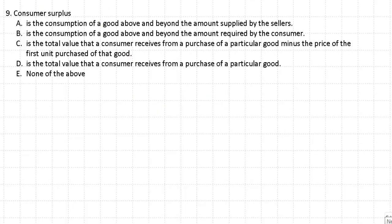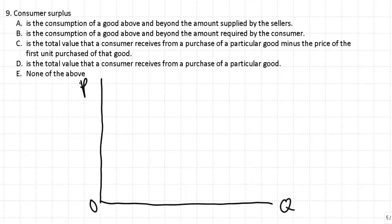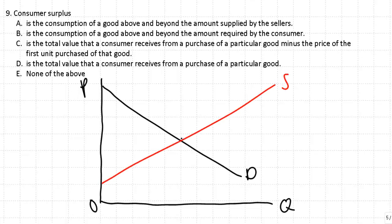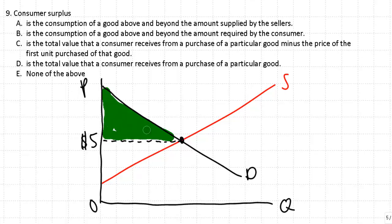Let's look at our last question, which is about consumer surplus. Here's our demand curve and our supply curve — we'll draw equilibrium and the market price. Let's say the market price for this item is $5. Consumer surplus is going to be the area above the market price and below the demand curve — this whole green area here, above the market price of $5 and below the demand curve, is consumer surplus.